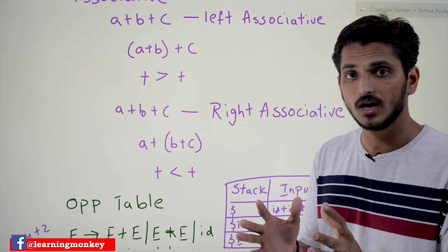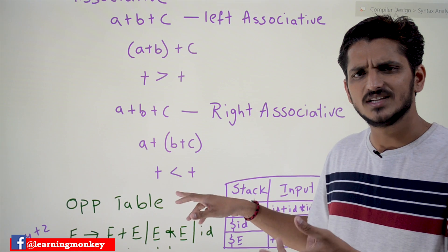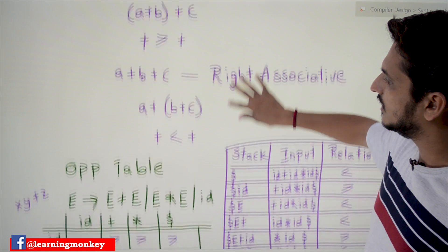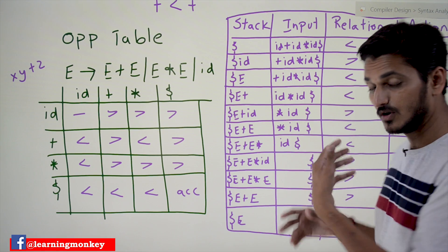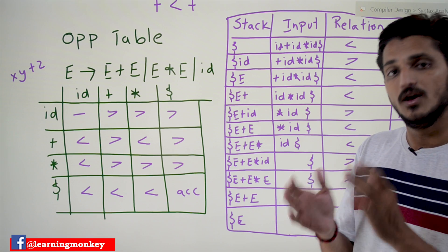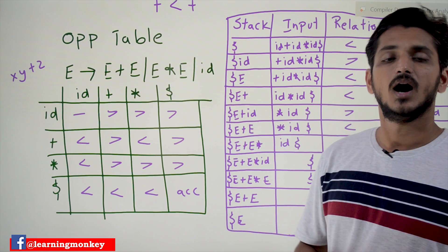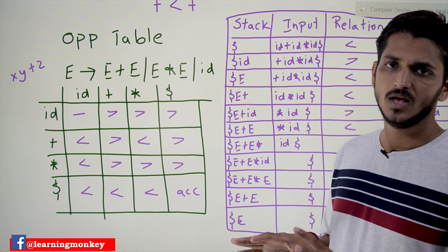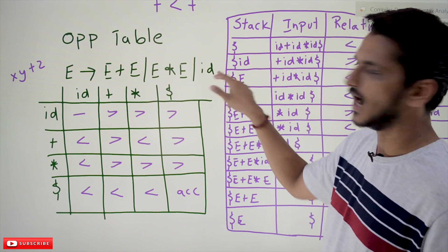According to our requirements we assign these relationships. Why we assign them and what their use is will become clear when we discuss the example. Now, before going to the example, we need to create an operator precedence parsing table. Assume this is the grammar we are using: E → E + E | E * E | id. This is an ambiguous grammar.